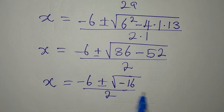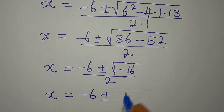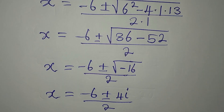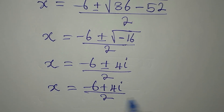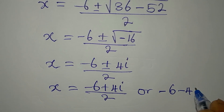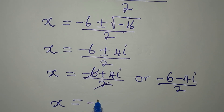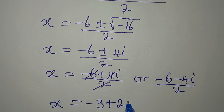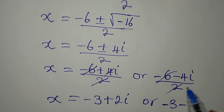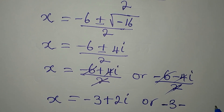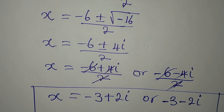That gives x equals negative 6 plus or minus the square root of negative 16, divided by 2. The square root of negative 16 is 4i, so x equals (negative 6 plus 4i) over 2 or (negative 6 minus 4i) over 2. Simplifying, x equals negative 3 plus 2i or x equals negative 3 minus 2i. So we have two more solutions, meaning the given equation has four solutions in total.